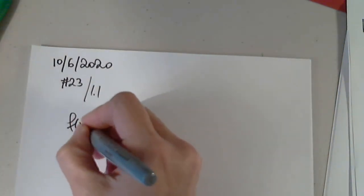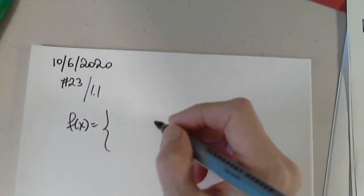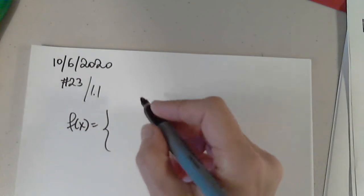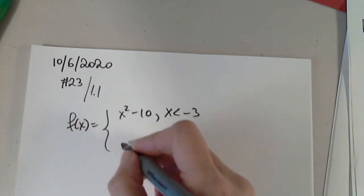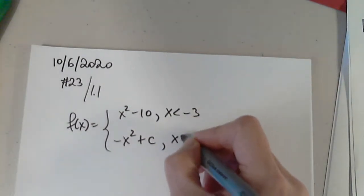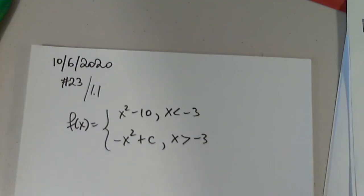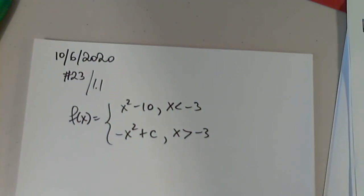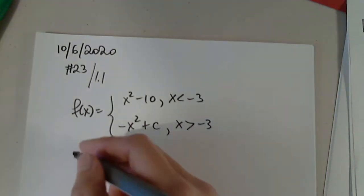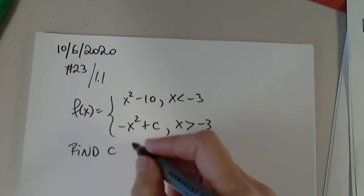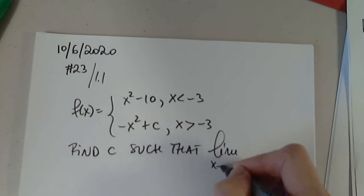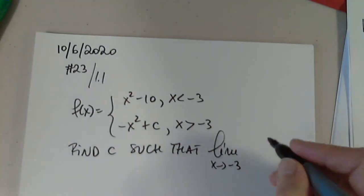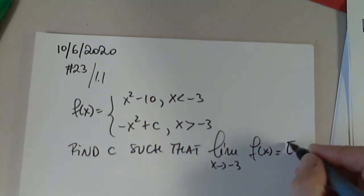Thank you for asking that. I didn't get a chance to show one. So: x squared minus 10 for x less than negative 3, and negative x squared plus c for x greater than negative 3. They say determine the value of c so that the limit from either side exists. So find c such that the limit as x approaches negative 3 from either side of f of x exists.